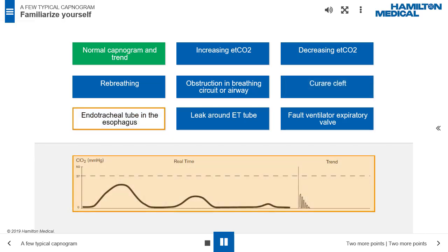Endotracheal tube in the esophagus. If the ET tube is placed in the esophagus, either no CO2 is sensed or only small transient waveforms are present.